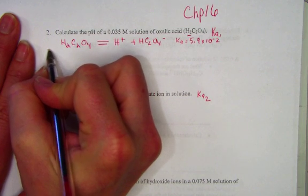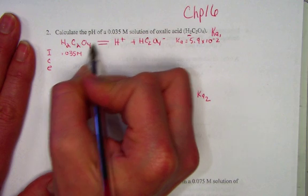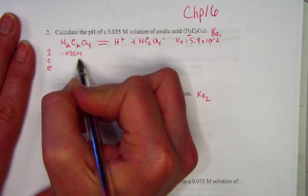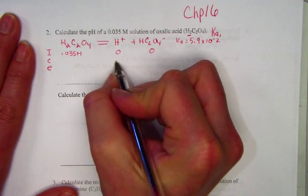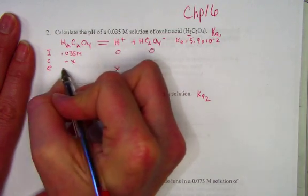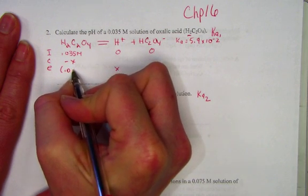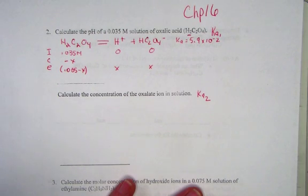In the ICE chart, 0.035 molar represents the initial concentration of the acid and the ions would be at 0. The ions form to give us the value of X, and at equilibrium we would have 0.035 minus X representing the concentration of our acid.